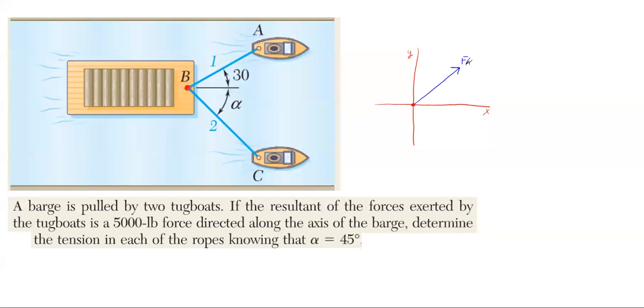Then we have tugboat C which is pulling down here, and it's stating that this alpha angle is 45 degrees.